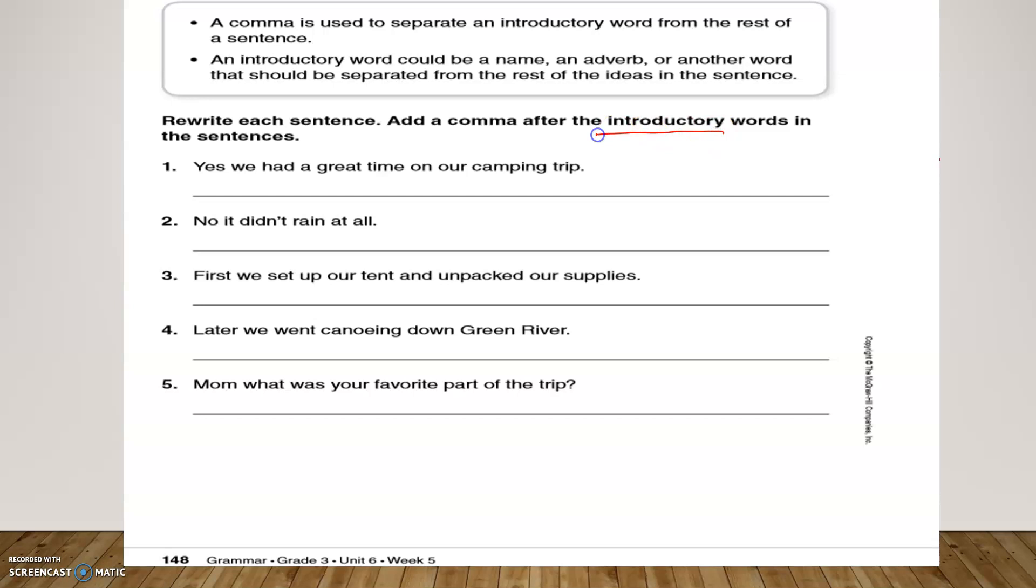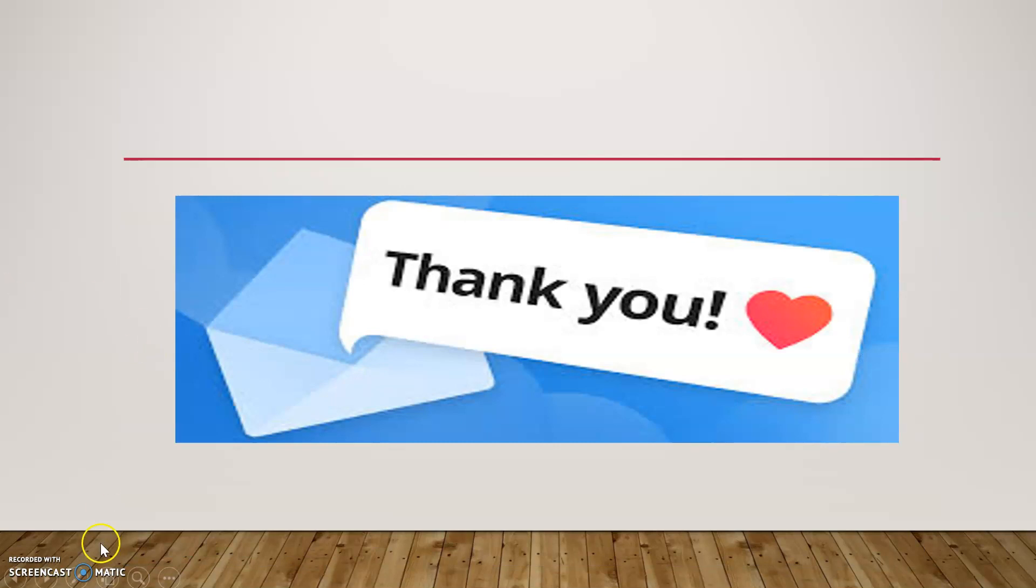It's the words that come in the beginning of the sentence and need a comma after it. Number one: Yes, we had a great time on our camping trip. Where is the introductory word? Yes, it's yes. Yes is the introductory word. Where should we add the comma? It's always after the introductory word. So, the comma should be here. Solve the other four alone and we are done with our grammar lesson. Thank you so much for listening and I hope it's clear. See you next time. Bye-bye.